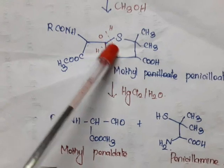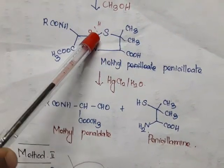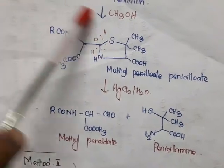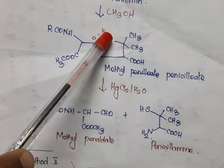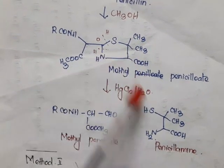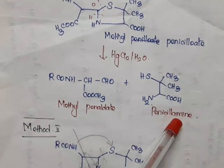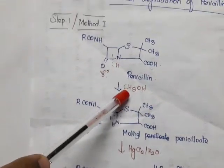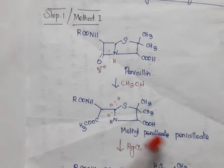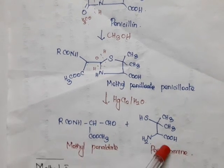So the products obtained are: R-CO-NH-CH-COOCH3 with CHO — this is called methyl penaldate. The next product is SH-CH-CH with CHO, OH, and NH2 — that is penicillamine. So in method 1, by means of methanol, first we get methyl penicilloate, and on further hydrolysis we get methyl penaldate and penicillamine.